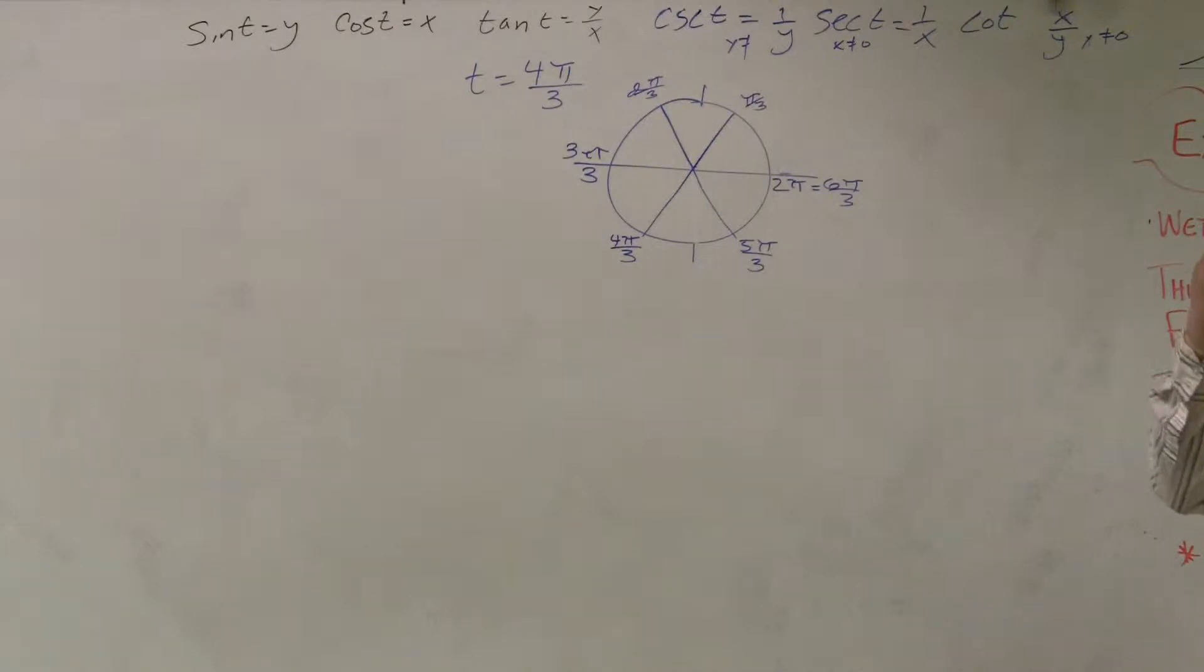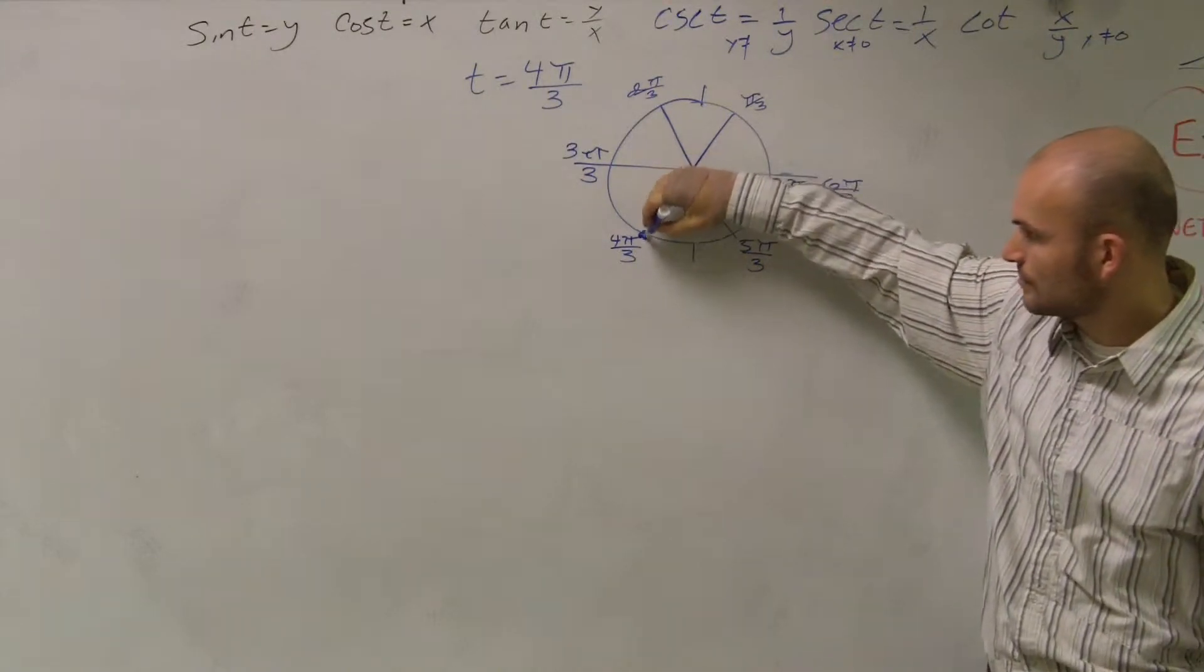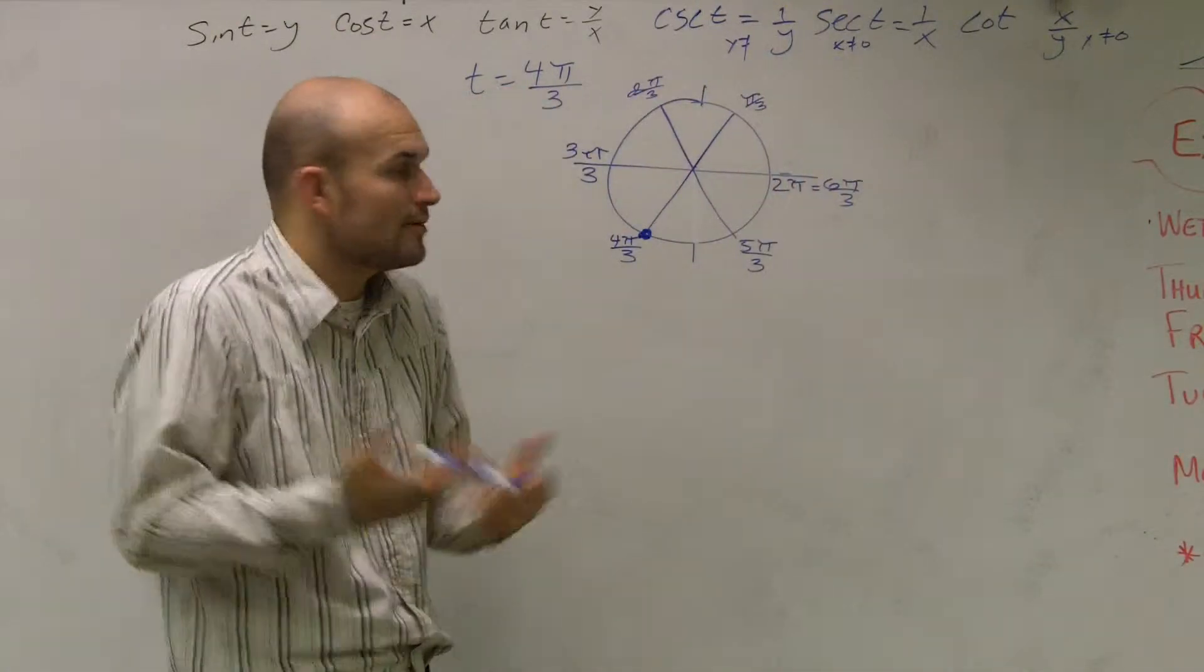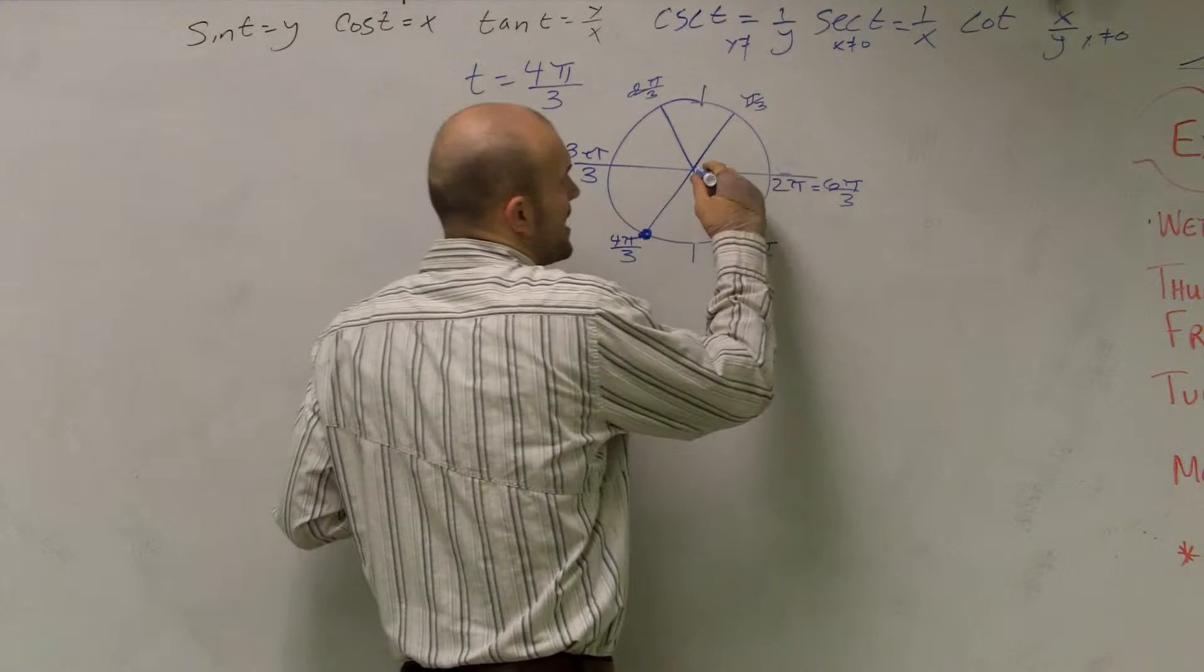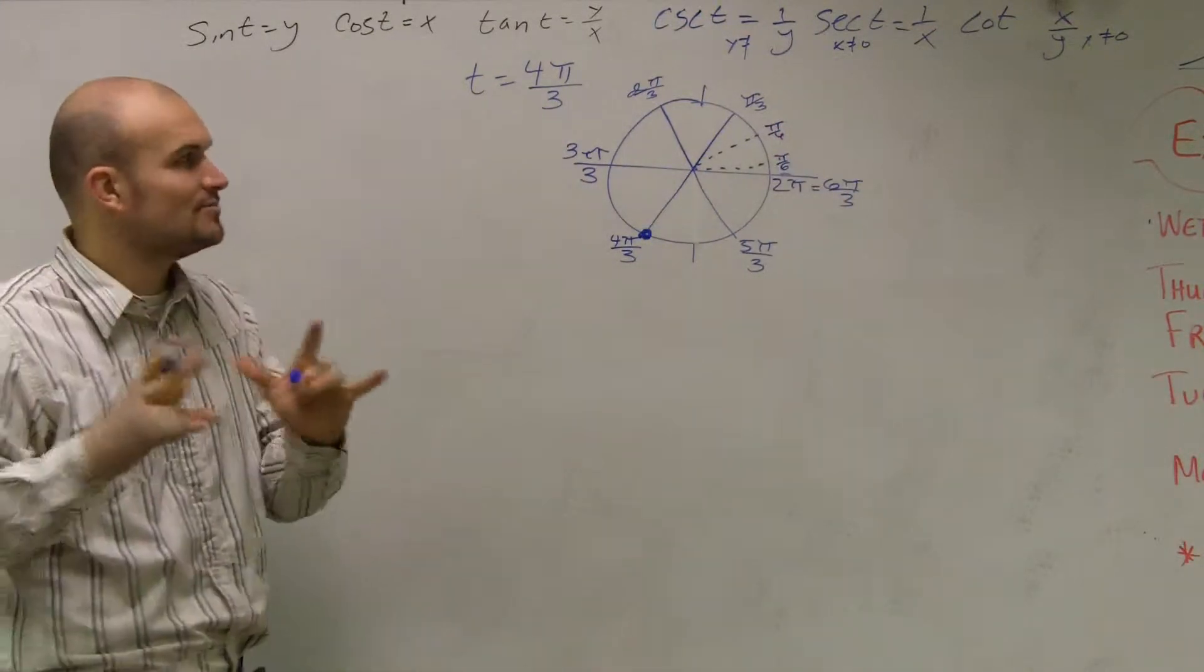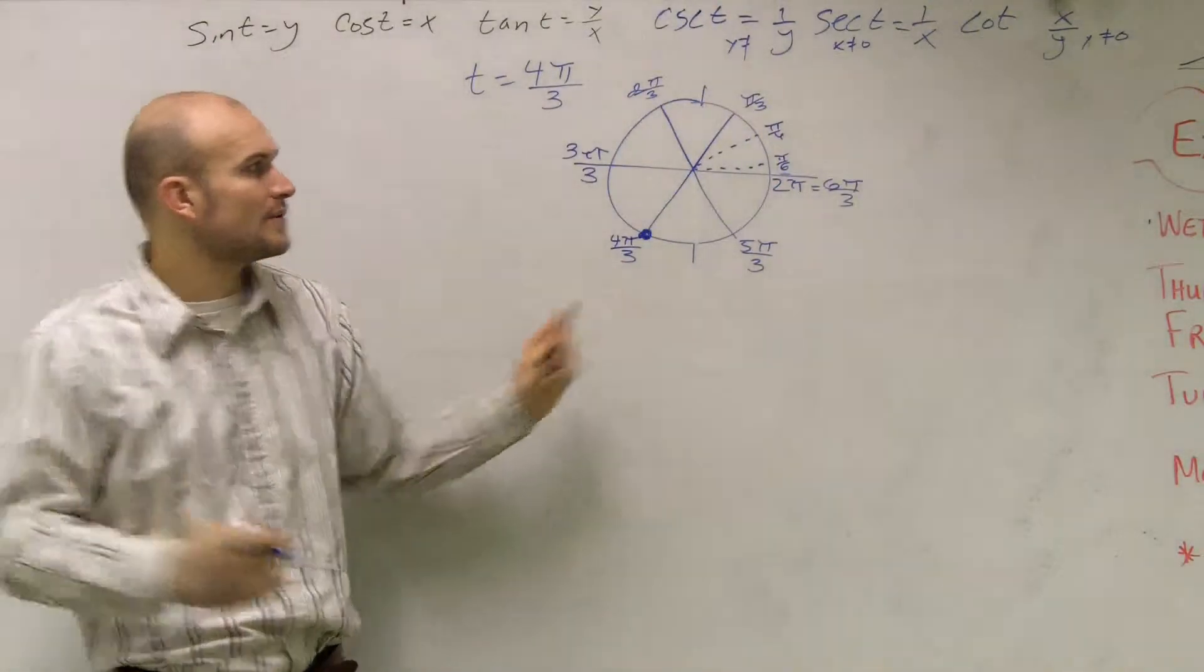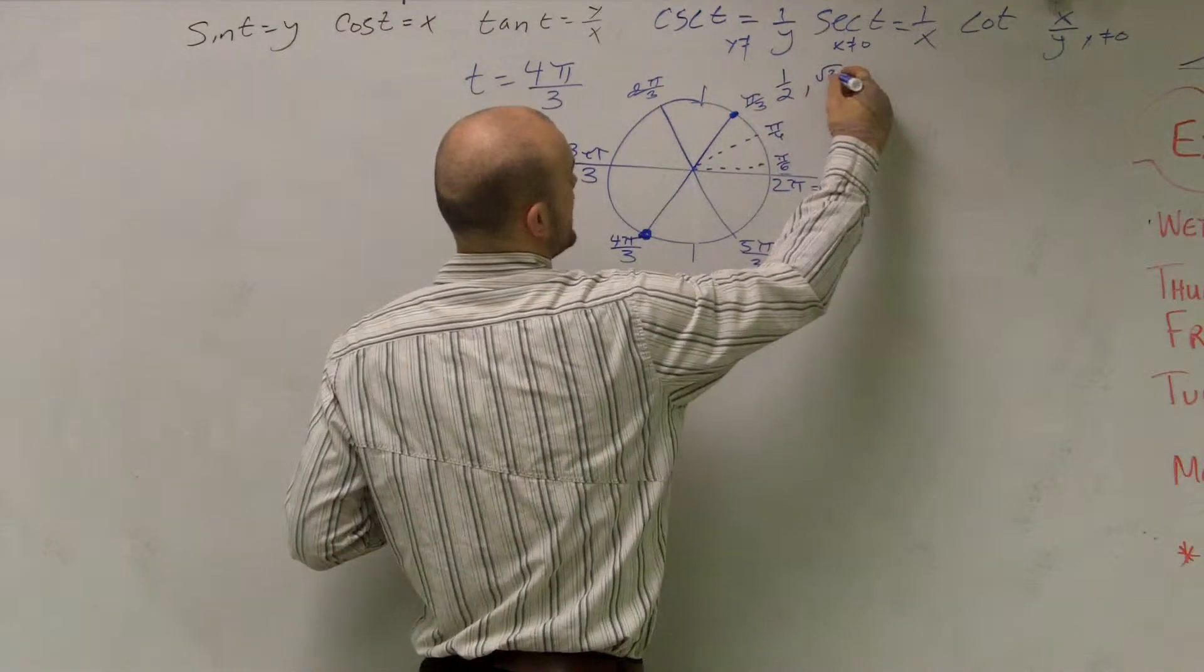So when looking at this problem, I notice that 4π over 3 is going to be this point right here. Right? Now the next thing we need to do is determine, well, what is the value of this point? What is my x and y value for this point? Well, I first need to know what is my value for π over 3. I told you guys to remember π over 6. You guys should have that memorized. And you should also have π over 4 memorized.